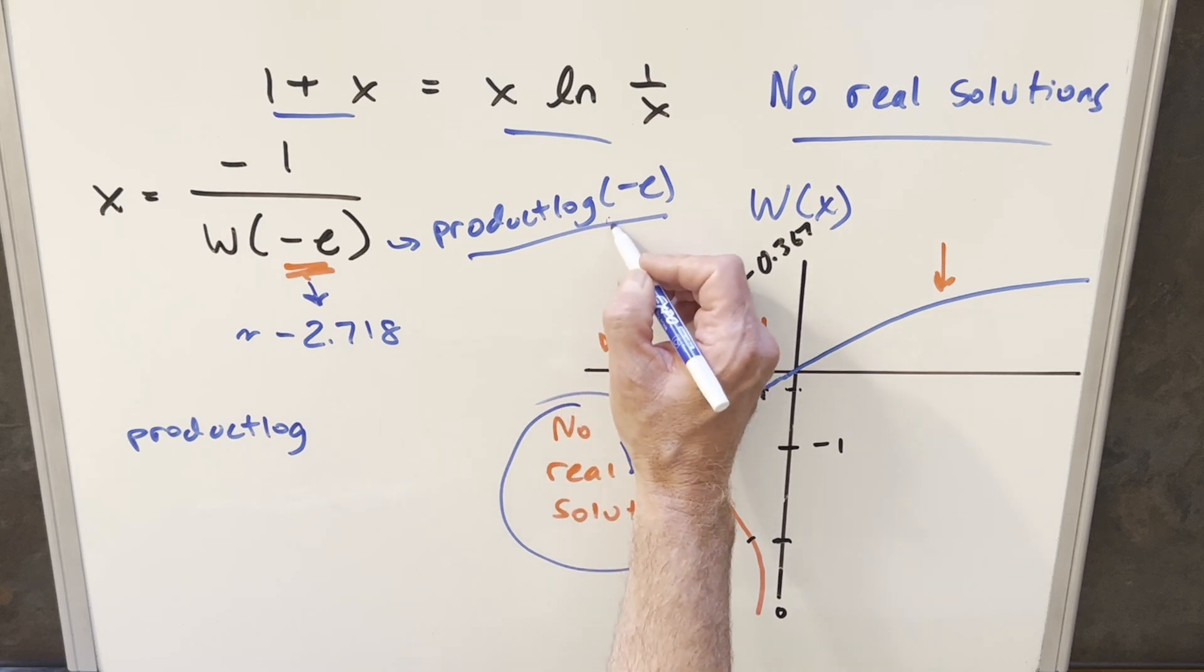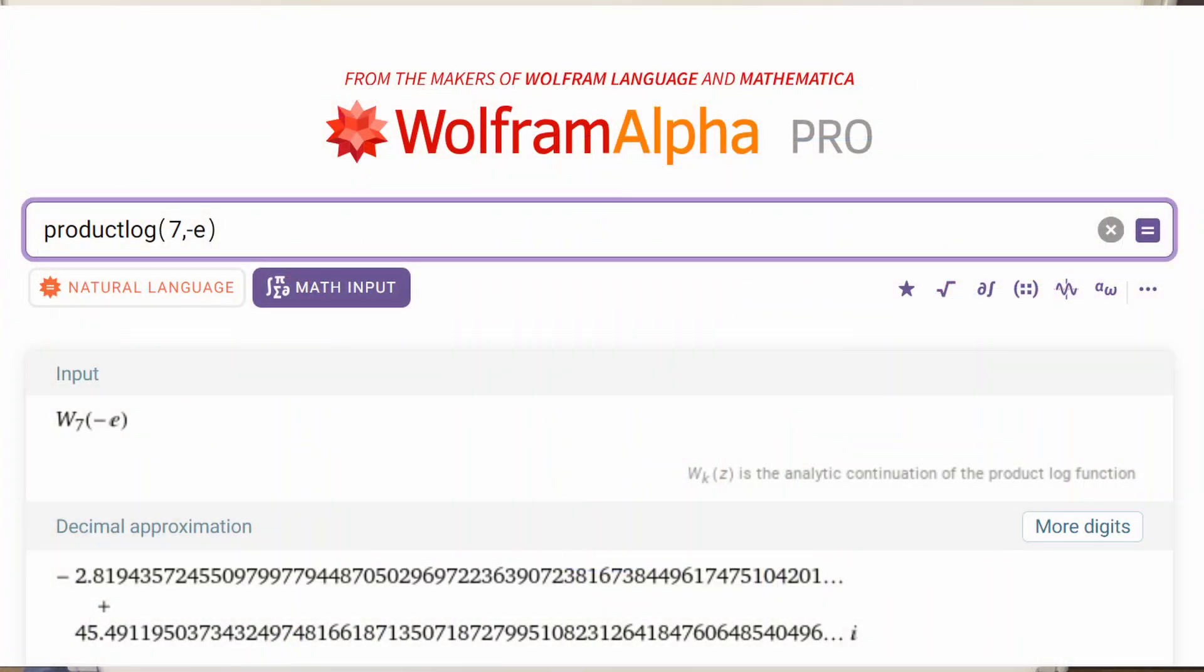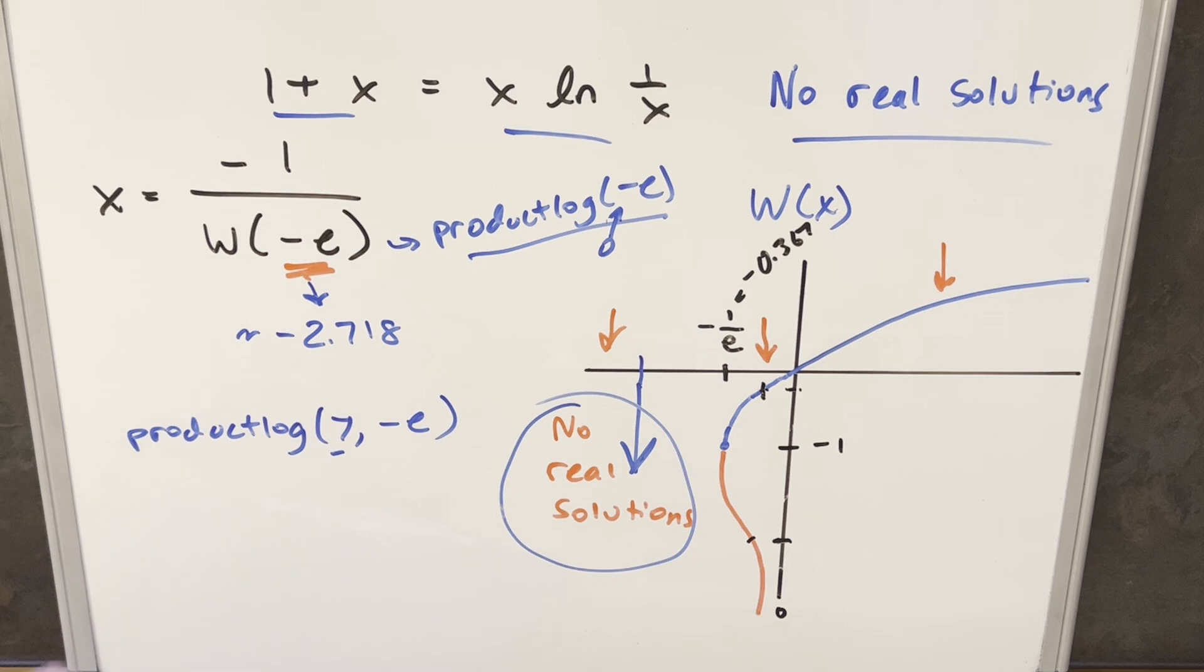But if you want to specify a branch, and like I said, I think there's an infinite number, you can just put it in this first spot, do it like product log, seven minus e, let's say. And that's going to give you another complex solution. But of course, you could just keep going, you could do eight, you can do nine. Another common one, this branch right here in Wolfram Alpha, I believe is minus one.